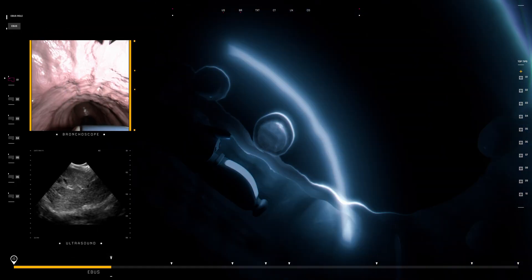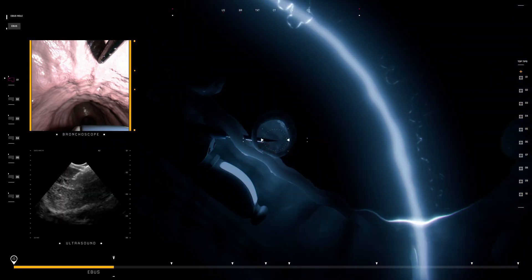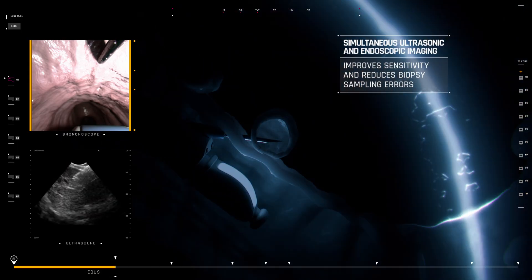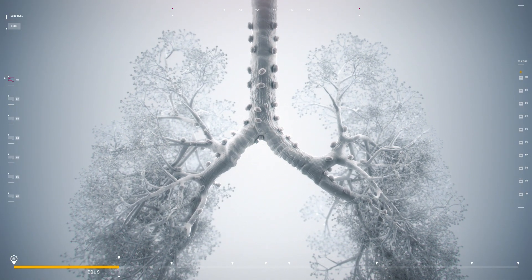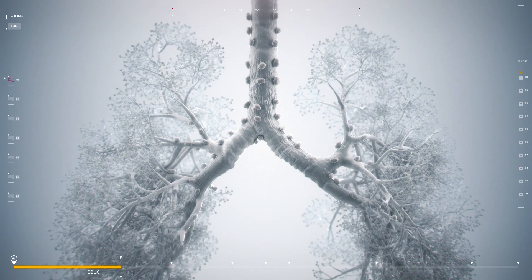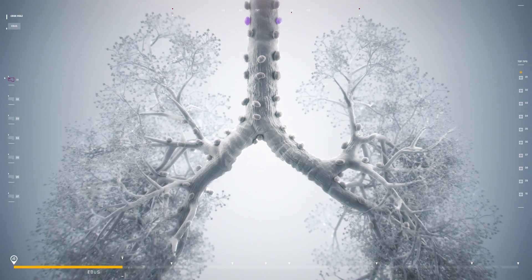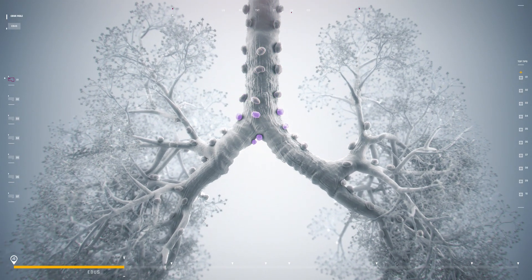EBUS-guided transbronchial needle aspiration allows adequate sampling of all intrathoracic lymph nodes adjacent to the bronchial tree, including stations 10R, 10L, 11R, and 11L, which are inaccessible by other more invasive techniques.